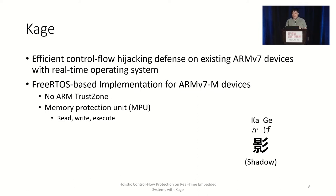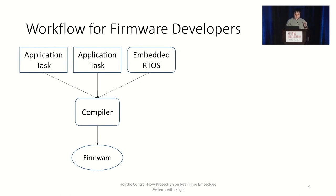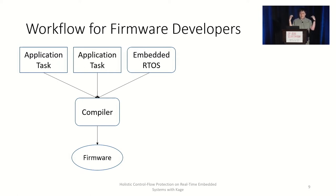We implemented Kage based on FreeRTOS for ARMv7M devices — devices that do not have ARM TrustZone. Instead, they utilize the ARM Memory Protection Unit, which allows setting access permissions for the address space with read, write, and execute accesses. In the embedded world, developers typically write all applications as well as the embedded real-time operating system and compile them together into a single firmware, which they then install on the device.